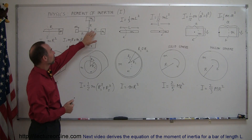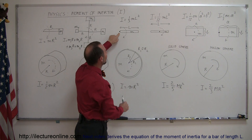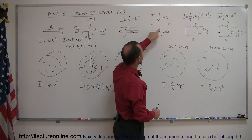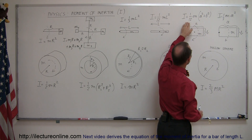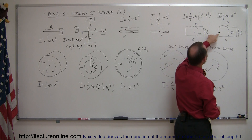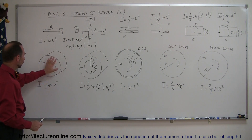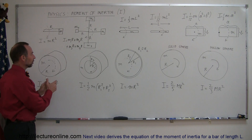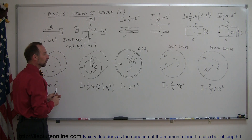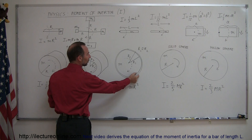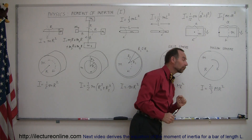Quick review: for multiple point masses, sum all MR² values. For a thin bar rotating about its end, I = (1/3)ML²; about its center, I = (1/12)ML². For a plank rotating about its center, I = (1/12)M(A² + B²); about its end, I = (1/3)MA². For a solid cylinder, I = (1/2)MR²; for a hollow cylinder, I = (1/2)M(R1² + R2²). For a thin ring, I = MR². For a solid sphere, I = (2/5)MR²; for a hollow sphere, I = (2/3)MR².